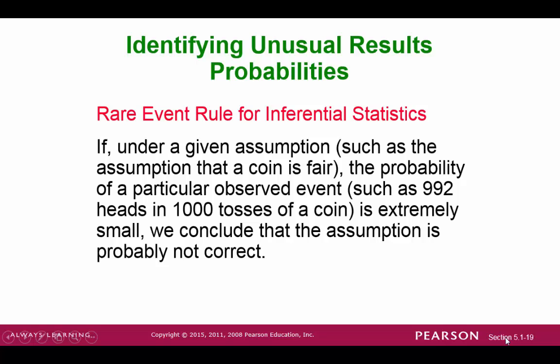It states here, if under a given assumption, the probability of a particular observed event is extremely small, then we can conclude that the assumption is probably not correct.